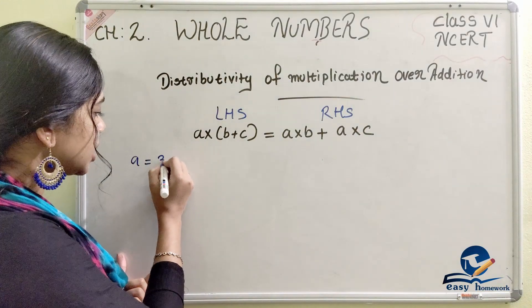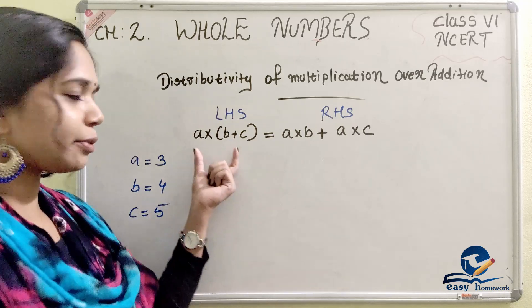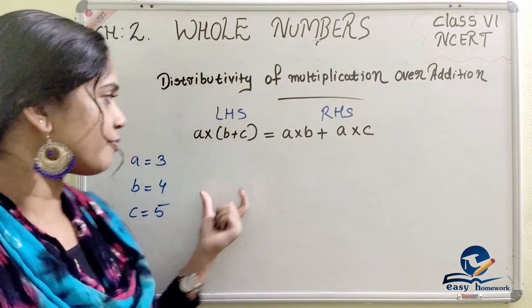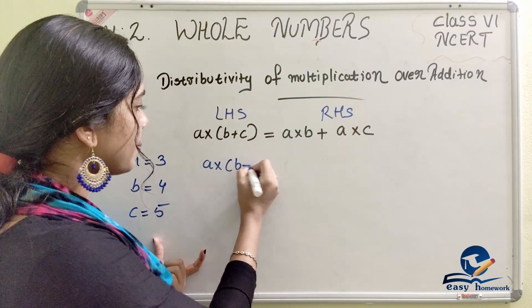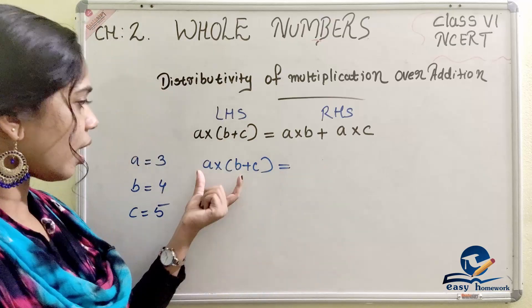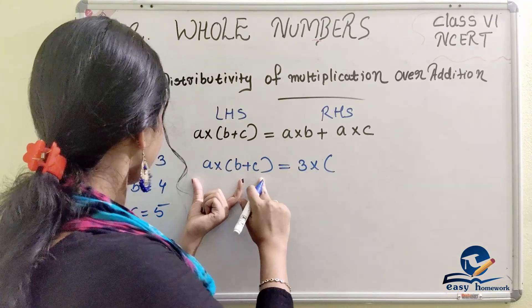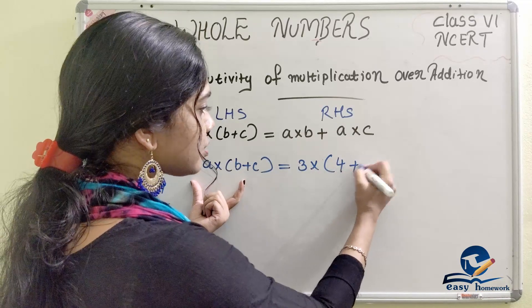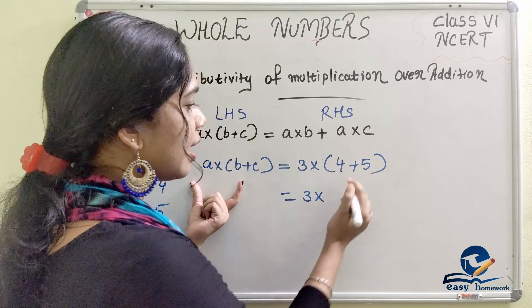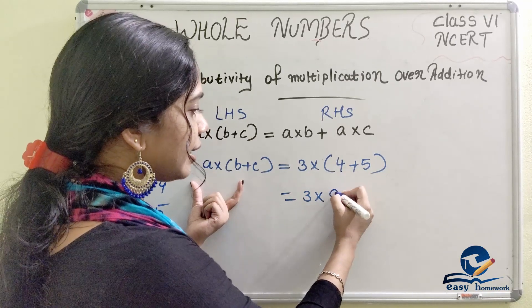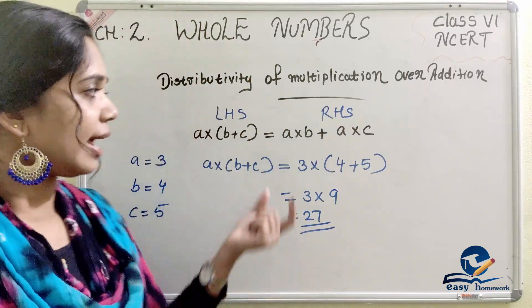Let A equal 3, B equal 4, C equal 5. Let's check the LHS first: A into (B plus C) equals 3 into (4 plus 5) equals 3 into 9 equals 27.